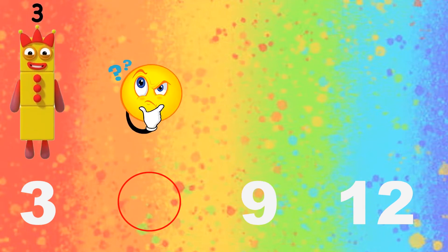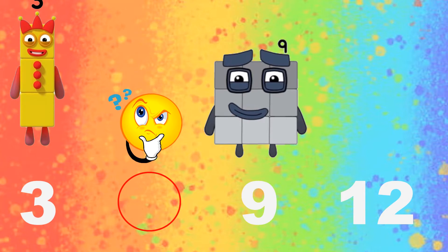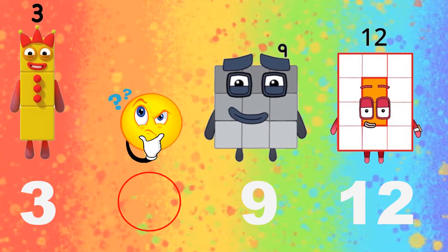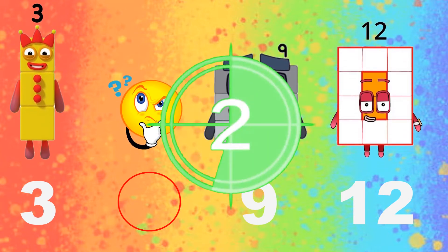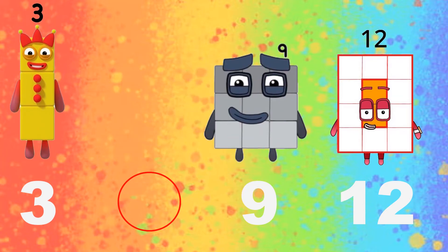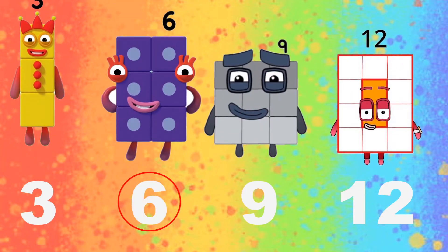And the missing number? 3, 9, 12. 3, 2, 1. The answer is 6.